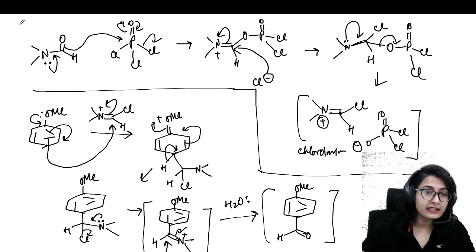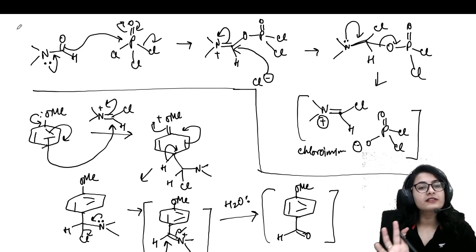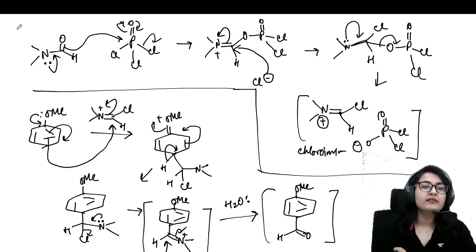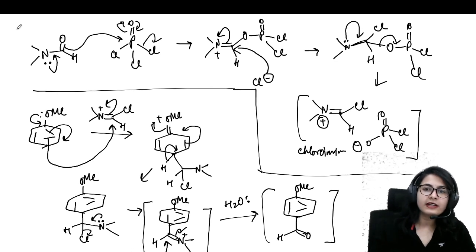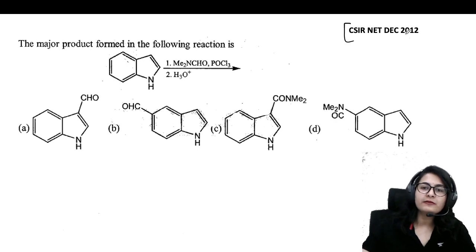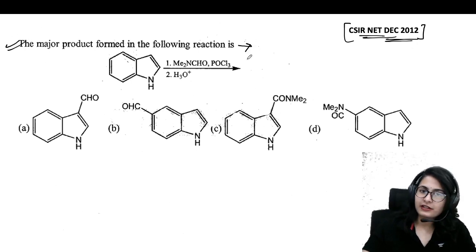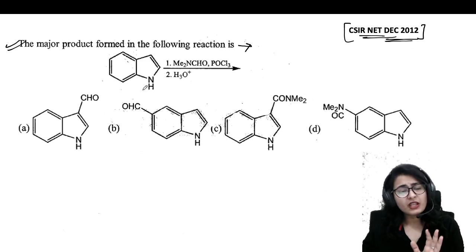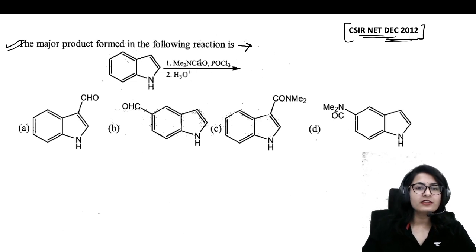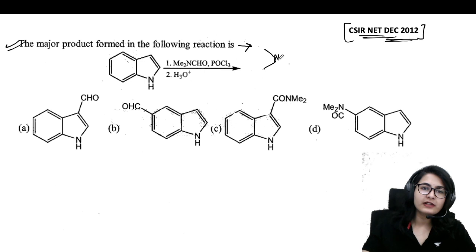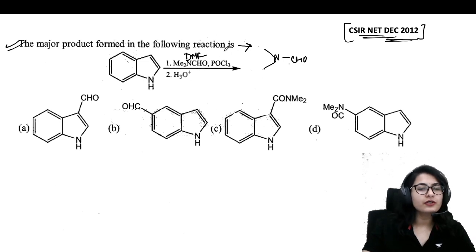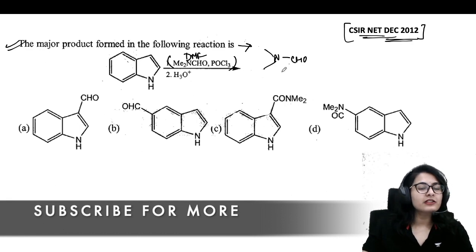Wherever you see the DMF and POCl3 combination, you know it's going to be your formylation reaction. You just have to take care of the regioselectivity — on which region the formylation takes place. Let's see some examples. The first question comes from the CSIR NET December 2012 paper: the major product formed in the following reaction. You are given an indole molecule in which one benzene and one pyrrole ring are fused.